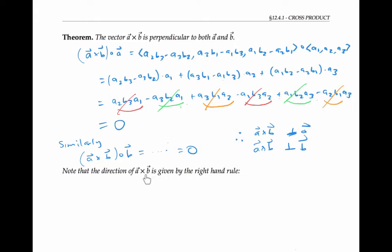There are actually two different vectors perpendicular to both a and b, since you could always go in the opposite direction. The direction of a cross b is given by the right hand rule. If this is vector a and that is vector b, we place the palm of our hand at the origin, stick our fingers out towards a, rotate them towards b, and the direction our thumb points is the direction of a cross b. In this example, a cross b would be coming out of the page.